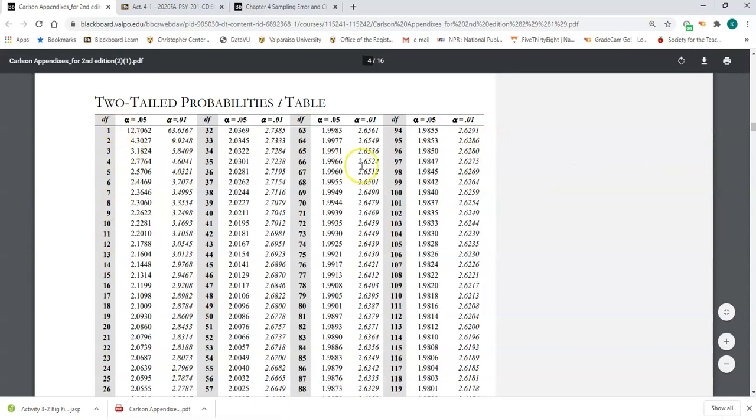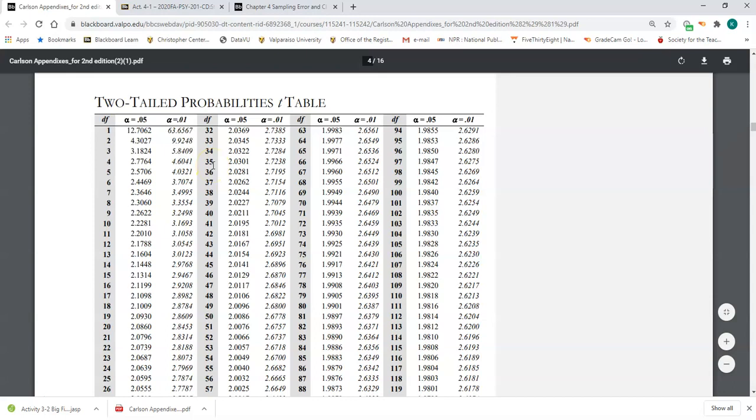Here is the table in Appendix B. Notice I'm using the two-tailed probabilities table. Let's just say that our sample size was 35. We would try and find the DF of 35. Our sample size is 35, so we find 35, but our DF is N minus 1.